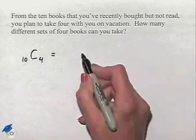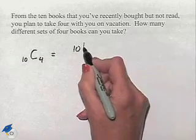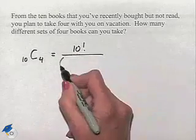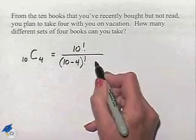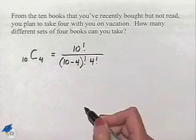It's going to have 10 objects and we're going to choose from that a combination of 4. The formula we'll use will give us 10 factorial divided by 10 minus 4 factorial times 4 factorial.